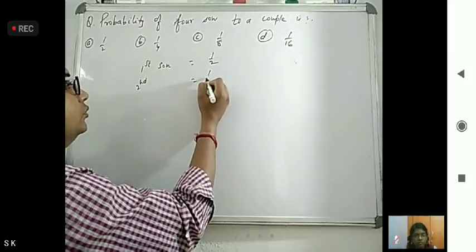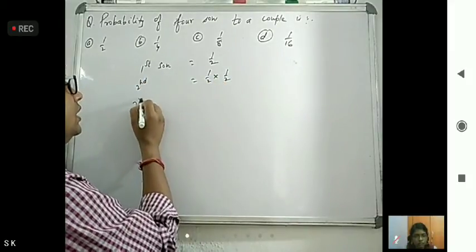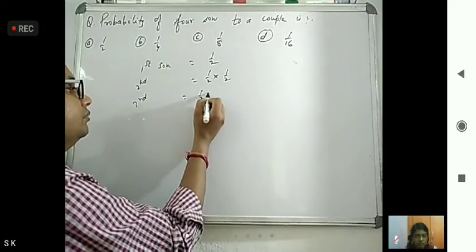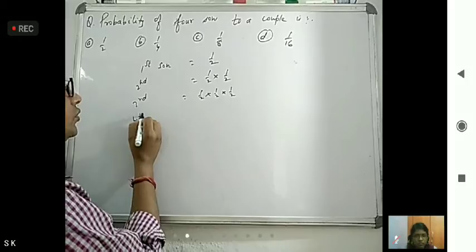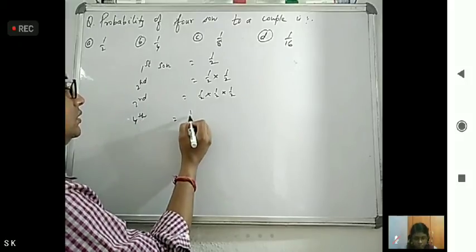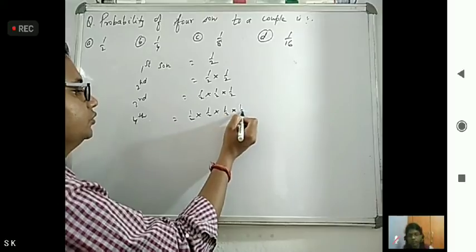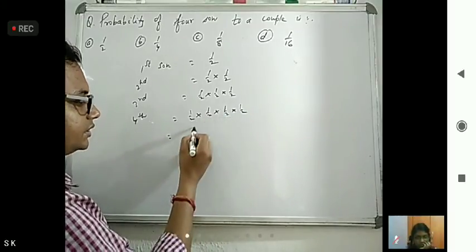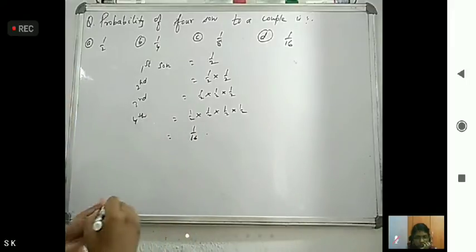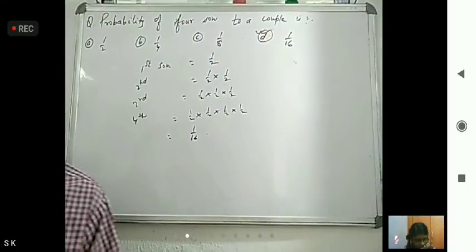Second, 1 by 2 into 1 by 2. Third, 1 by 2 into 1 by 2 into 1 by 2. And the fourth, 1 by 2 into 1 by 2 into 1 by 2 into 1 by 2. Now we have to complete 2 to the 4 to the 8 to the 16. So, 1 by 16. The probability of 4 into a couple is 1 by 16.